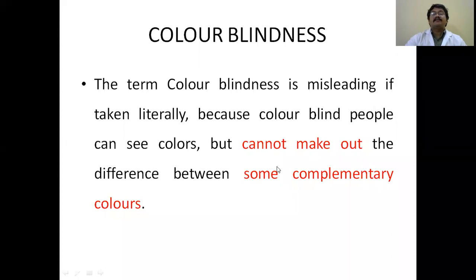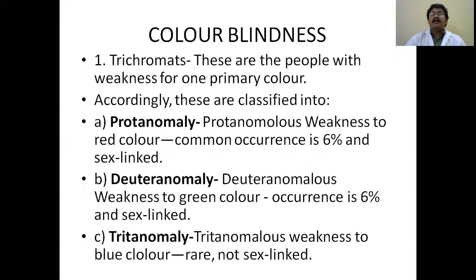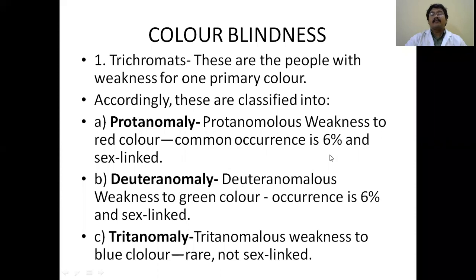Color blindness classification is based on John Dalton's three-receptor theory. Individuals are classified into trichromats, dichromats, and monochromats. Trichromats have all three functional cone types but have a weakness in one primary color: protanomaly (weakness to red, ~6% occurrence, sex-linked), deuteranomaly (weakness to green, ~6% occurrence, sex-linked), and tritanomaly (weakness to blue, very rare, autosomal involving chromosome 7).